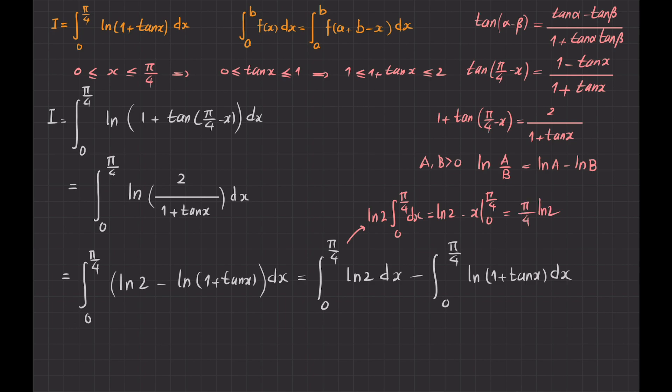So let us start from here. I write I equals to this expression minus I. But my goal is to find I. So I add I to both sides, it becomes 2I is equal to π/4 ln 2. I am looking for I, so I divide everything by 2, so it becomes π/8 ln 2.